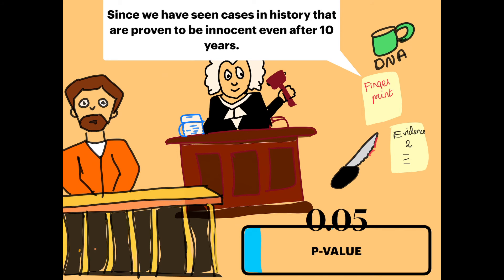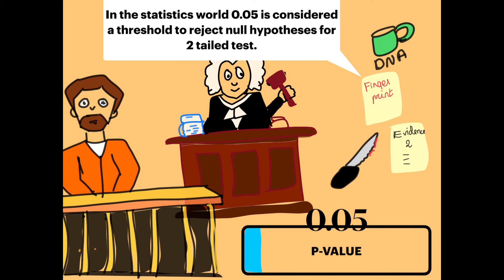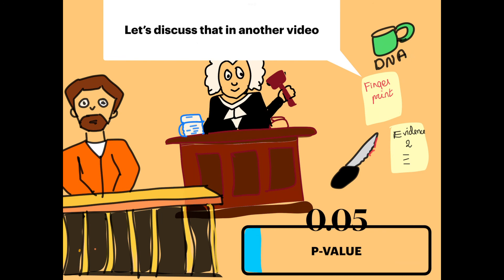So if the p-value is really low, we have high confidence of rejecting him as being innocent. In the statistics world, 0.05 is considered a threshold to reject the null hypothesis for a two-tailed test. Let's discuss that in another video.